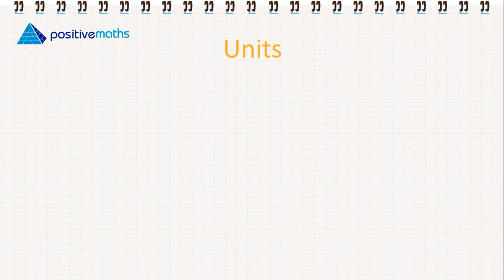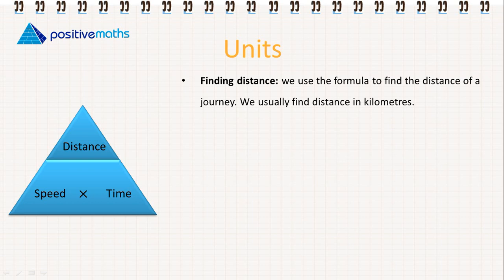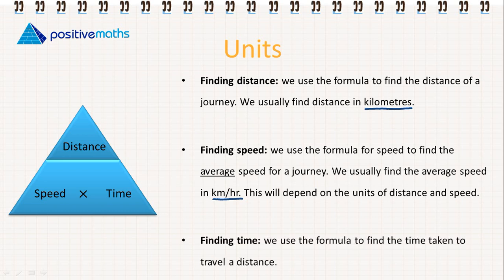The next thing we're going to discuss is the units that we use. For finding distance, we use the formula to find the distance of a journey. For finding speed, we use the formula for speed to find the average speed for a journey. We usually find the average speed in kilometres per hour. This will depend on the unit of distance and speed. And for finding time, we use the formula to find the time taken to travel a distance.